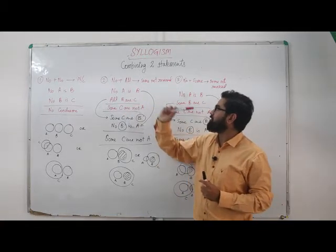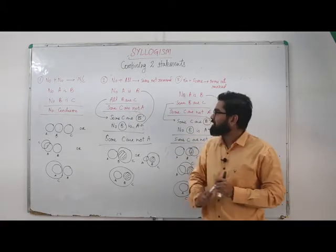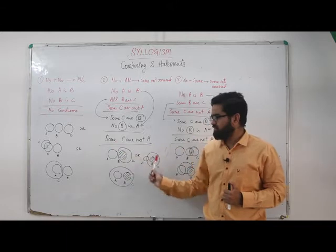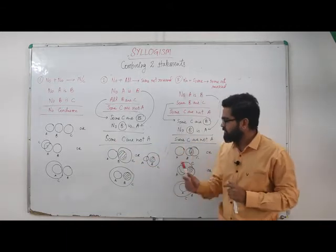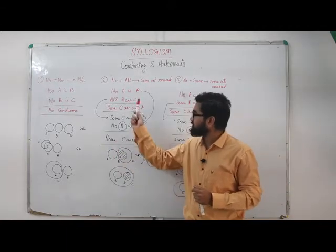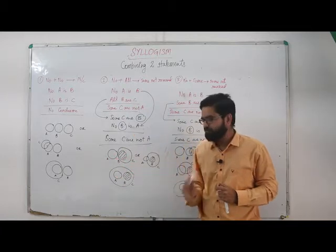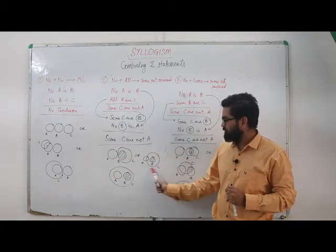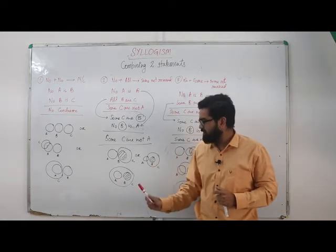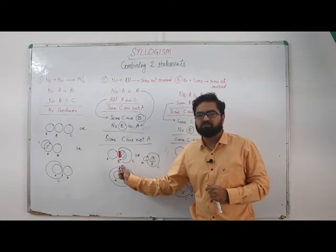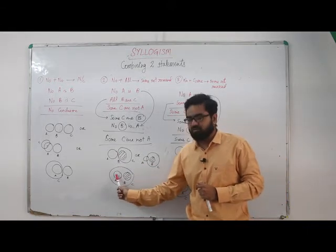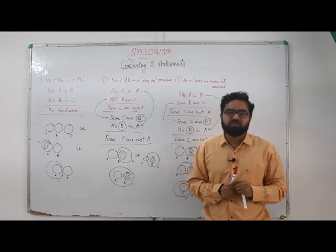So let's not go into the details which I mentioned here. Let's look at the Venn diagram first. If we see, let's say no A is B, then all B are C. No A is B, all B are C. And here again, what is the relationship from A to C? No A C, some A are C, some all A are C.